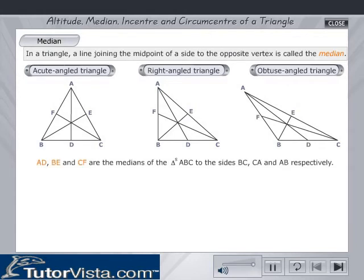In each of the three triangles ABC, AD, BE and CF are the medians. Points D, E and F are the midpoints of sides BC, CA and AB respectively.